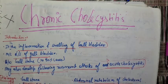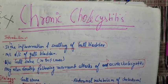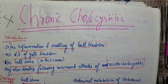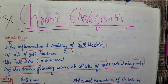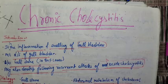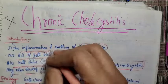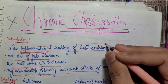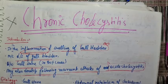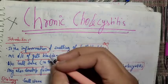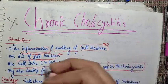Hey guys, what's up? Today we will talk about chronic cholecystitis. First of all, what is cholecystitis? It is inflammation of the gallbladder. So, what is chronic cholecystitis? Basically, it is inflammation and swelling of the gallbladder. This is the most common disease of the gallbladder.